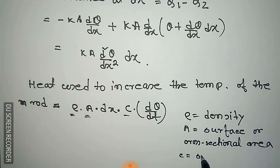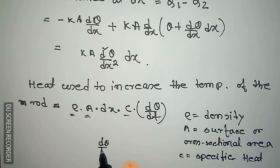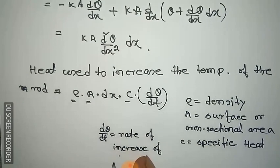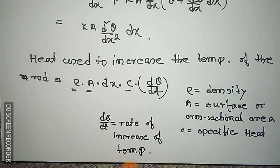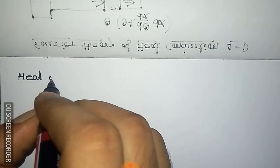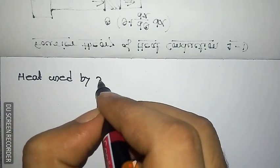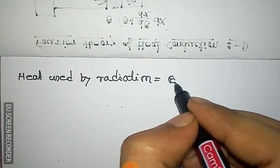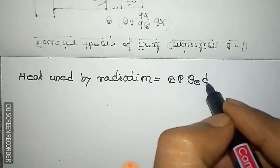Here c is the specific heat of the material of the rod, and d theta / dt is the rate of increase of temperature with respect to time. The other part of the total heat is used in radiation to the surroundings.